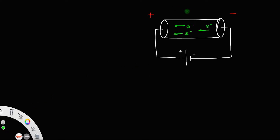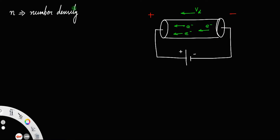We know that the electron is moving with the velocity called Vd, the drift velocity. In order to find the drift current, let n — small letter n — be the number density of the conductor. Number density means the total number of electrons divided by volume.